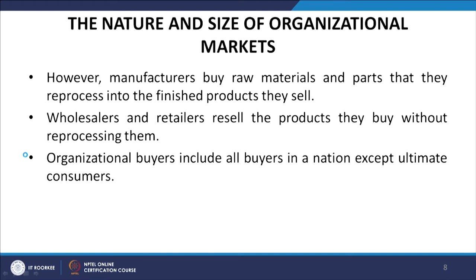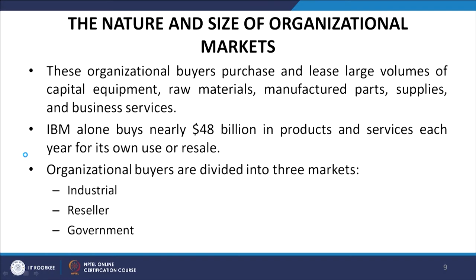Organizational buyers include all buyers in a nation except ultimate consumers. These organizational buyers purchase and lease large volumes of capital equipment, raw materials, manufactured parts, supplies and business services. IBM alone buys nearly $48 billion in products and services each year for their own use or for resale. Organizational buyers are divided into three markets: industrial markets, reseller markets and government markets.